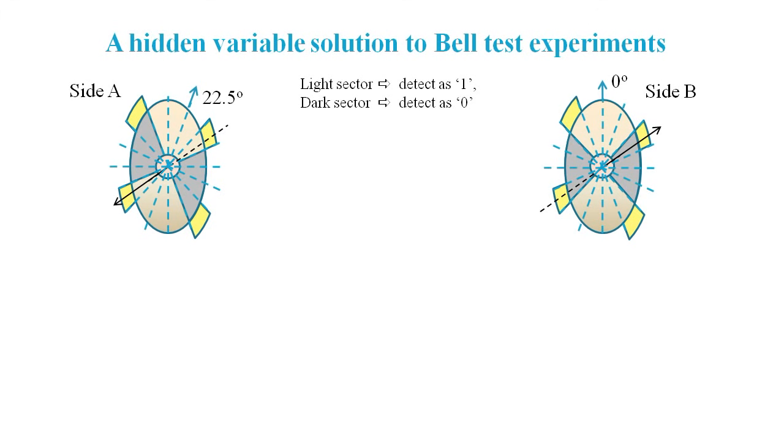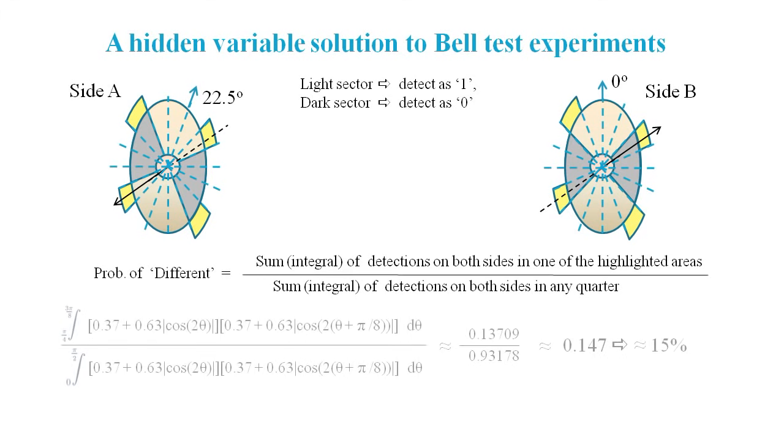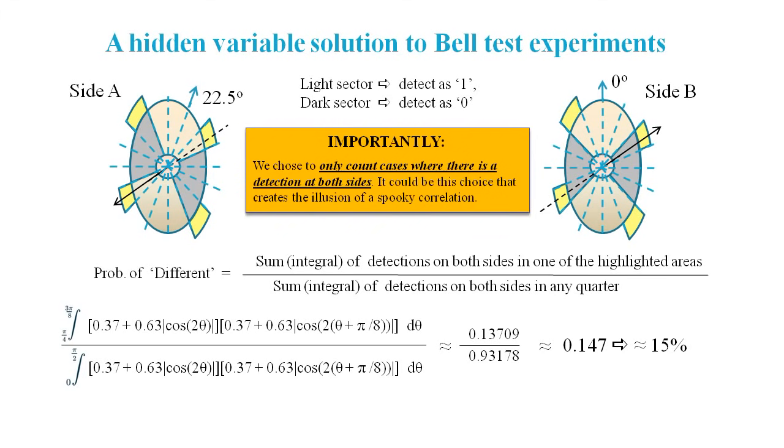In terms of area alone, this would result in 75% same and 25% different. But if we include the probability of detection, these figures will change. We can get a result that almost exactly matches the quantum mechanics predictions. We have created the illusion of a spooky correlation by only counting the outcomes where we've got detection on both sides.